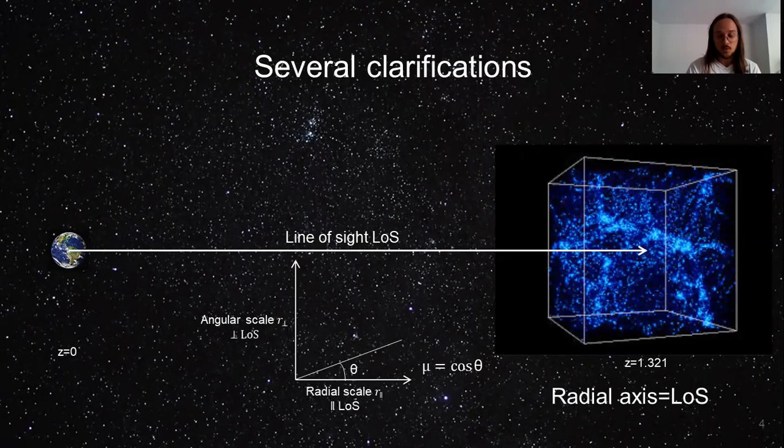Another important parameter that we consider is the mu parameter, that is equal to the cosine of theta, being theta, the angle between the line of sight and a particular mode.